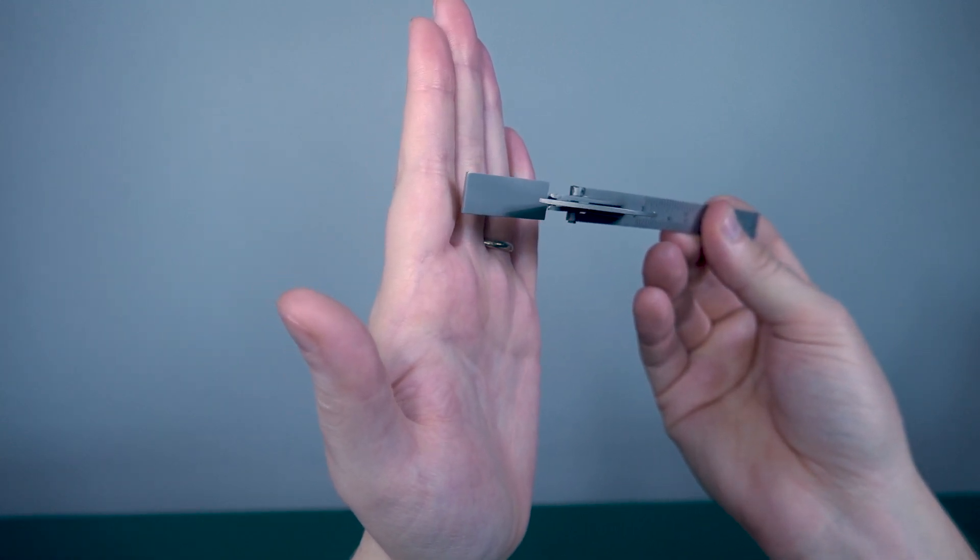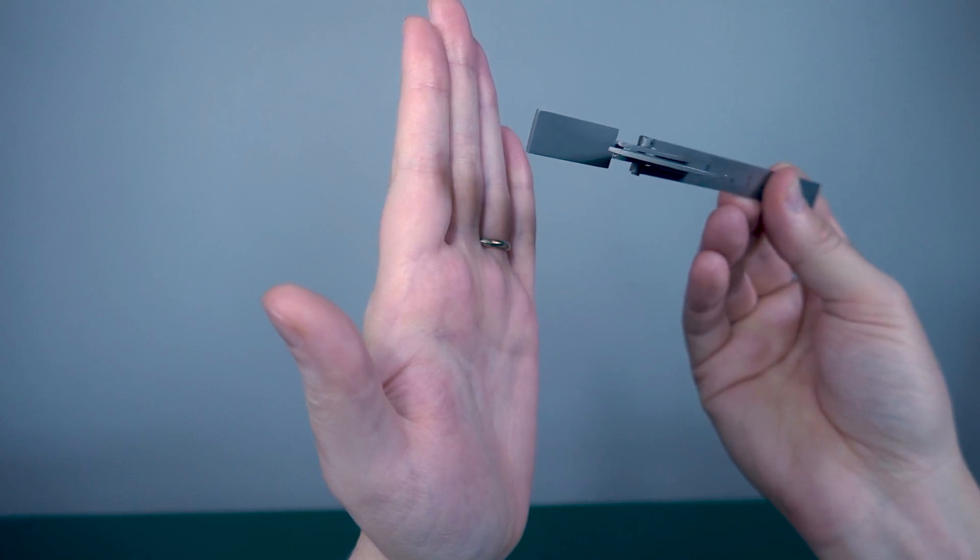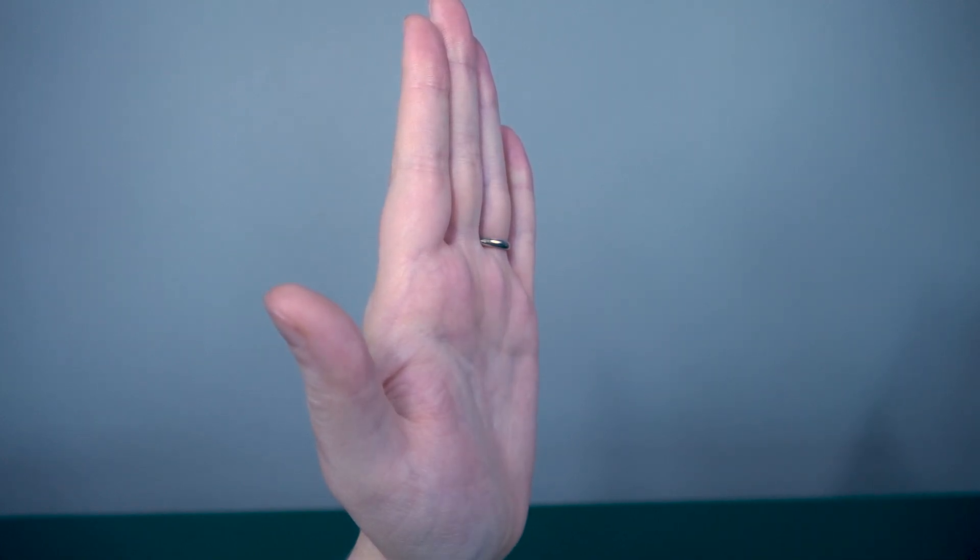The axis goes on the MCP joint and the movement arm on the proximal phalanx. Now when most people first start doing this,